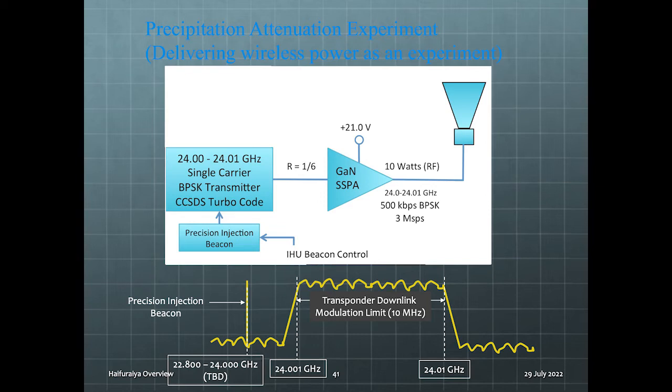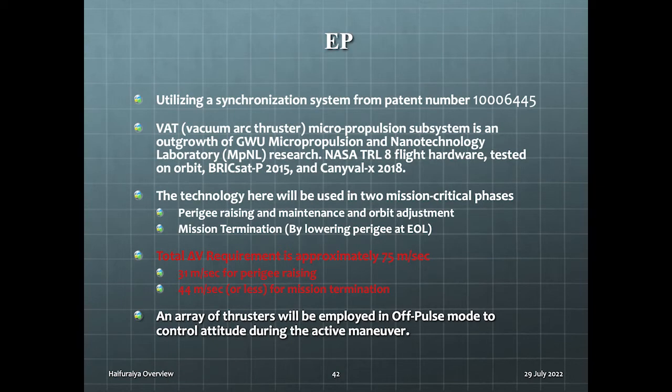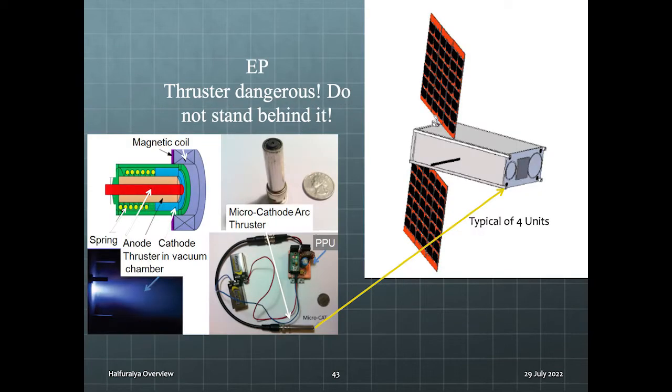Now we come to the electric propulsion subsystem. ORI has the green light to develop an open-source application of U.S. patent number 1-0-0-0-6-4-4-5. This is a wonderful opportunity and we are going to take full advantage of it. This vacuum arc thruster micropropulsion subsystem is an outgrowth of the GWU Micropropulsion and Nanotechnology Laboratory research. NASA Technology Readiness Level 8 flight hardware has been tested on orbit. The engine will do two things. It will raise the orbit and assist in disposal. A key part of this patent is synchronization of the motors which reduces negative effects on broadband microwave communications. We have a fundraiser going on right now to build engineering models.